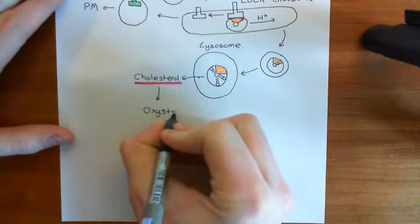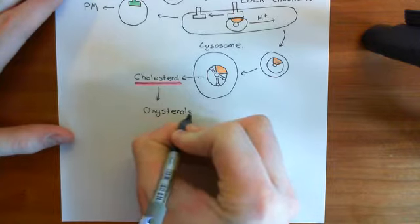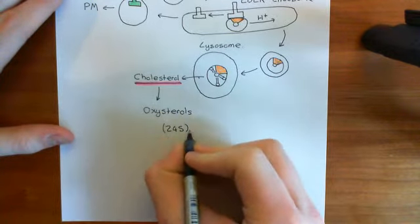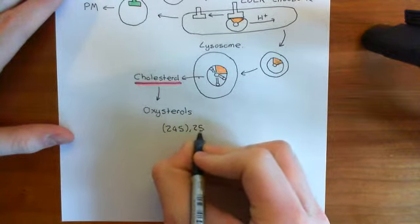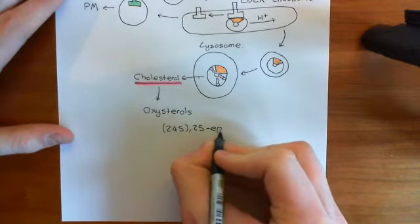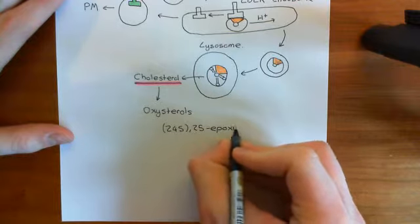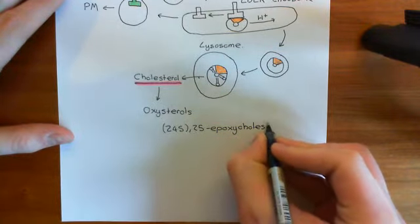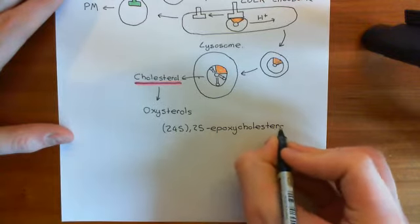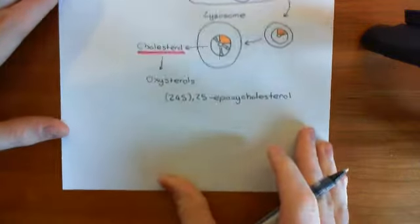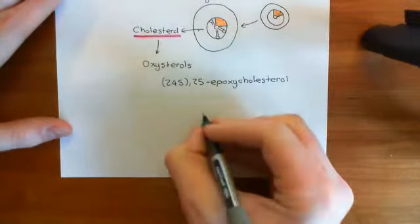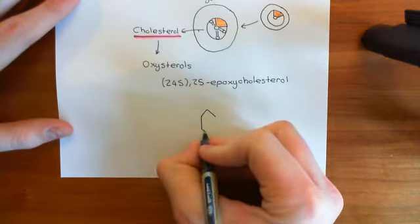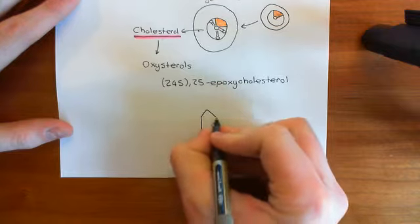What's the result of dumping cholesterol into the hepatocyte cytoplasm? The same process that happens in peripheral cells will happen within the hepatocyte: when cholesterol goes up, oxysterols will also go up. One key example is 24S,25-epoxycholesterol, which is specifically found at high levels within liver cells.